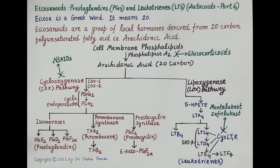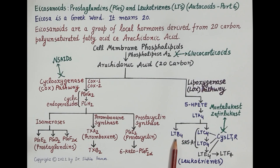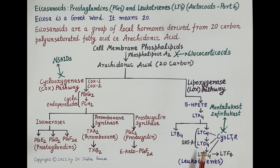Leukotriene B4 is synthesized in WBCs, specifically neutrophils. It attracts immune cells to the site of inflammation, further enhancing the inflammatory process. Therefore, leukotriene B4 is termed a potent chemotactic agent.